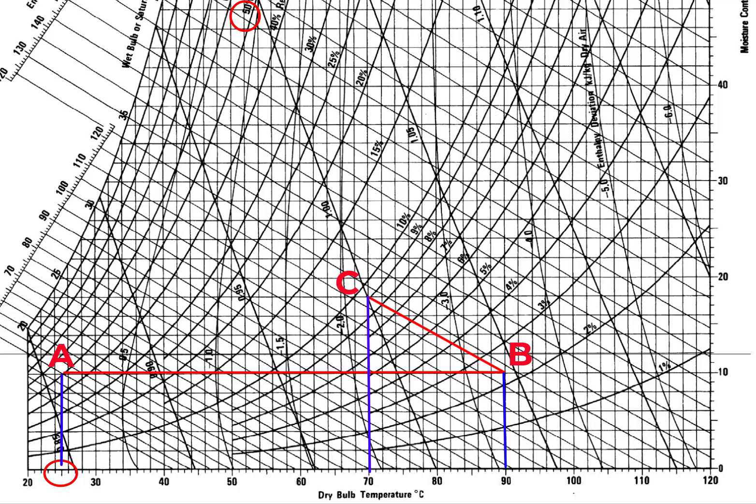The air exiting the dryer is then conveyed through another heater where the temperature is increased again to 90°C. This is represented by a horizontal line, and we identify point D. So C to D is the air going through the second heater. Again, that air is conveyed through another bed of moist pet food, and again we follow the adiabatic saturation process.